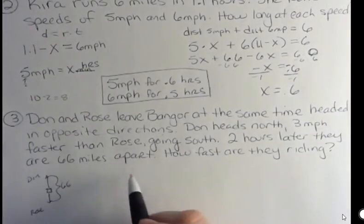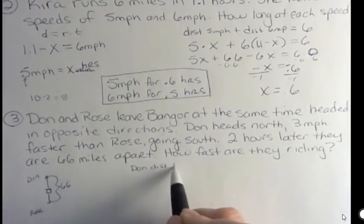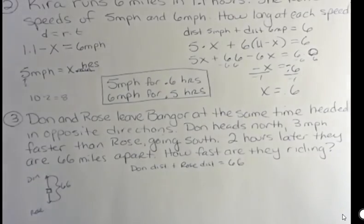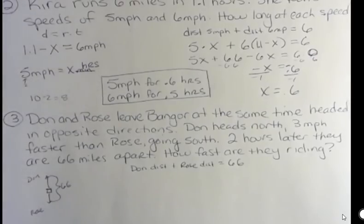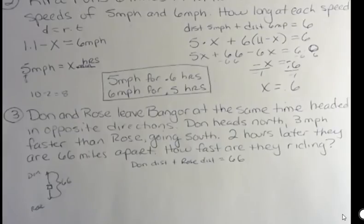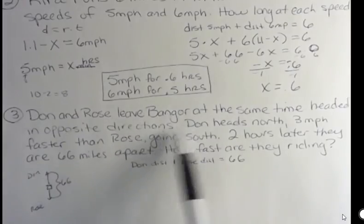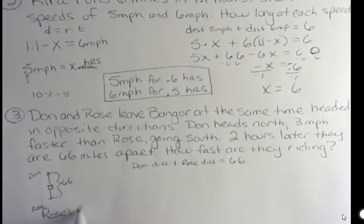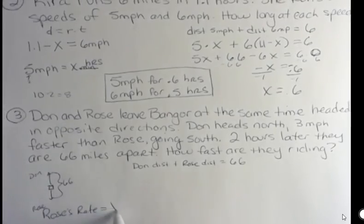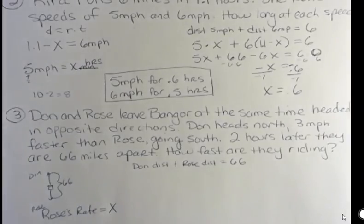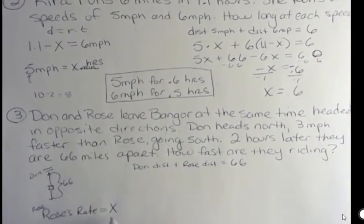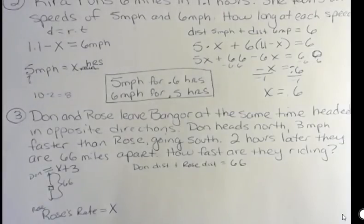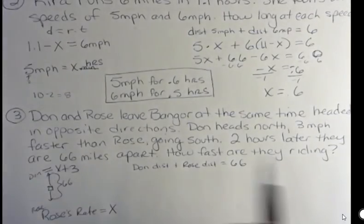So I know that Don's distance plus Rose's distance equals 66. Now they both rode for two hours. They were both moving the whole time. So they both have a two hour time. What's their rate? Well, Don was going three miles per hour faster than Rose. So let's say that Rose's rate is X. I don't want to use R because R is rate and rate could stand for both of them. If Rose's rate is X, what would Don's rate be? Well, he's going three miles per hour faster. That's not 3X, that's X plus 3, right? So Don is going X plus 3 rate. Rose is going X and they're both traveling for two hours.